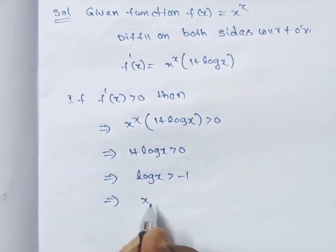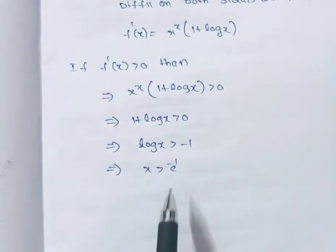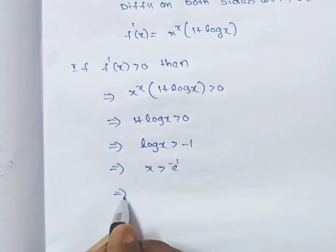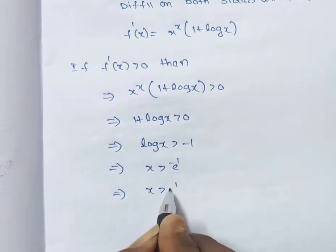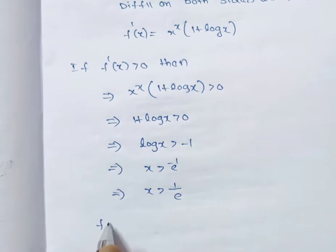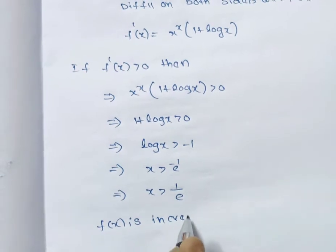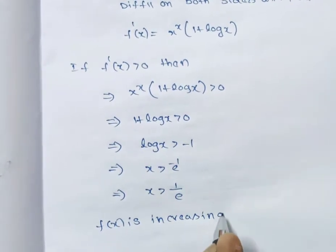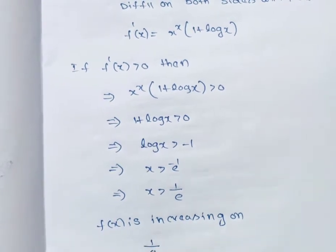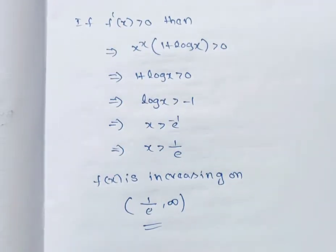This implies log x > −1, so x > e^(−1), which means x > 1/e. Therefore, f(x) is increasing on the interval (1/e, ∞).